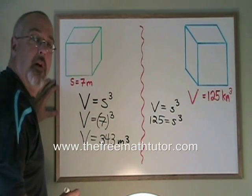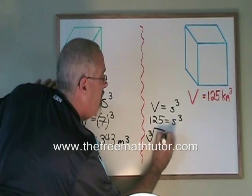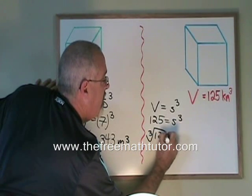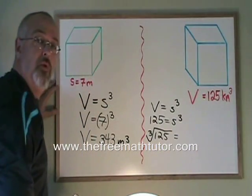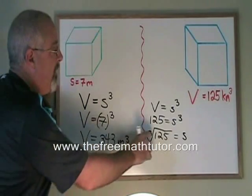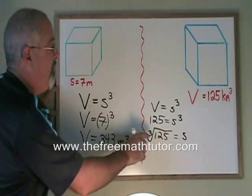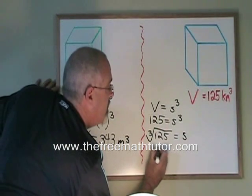Now we need to be able to find the cube root of each side. The cube root of 125 is going to be equal to the cube root of s cubed, which is s. The cube root of 125 will be equal to the side length. The cube root of 125 happens to be 5.